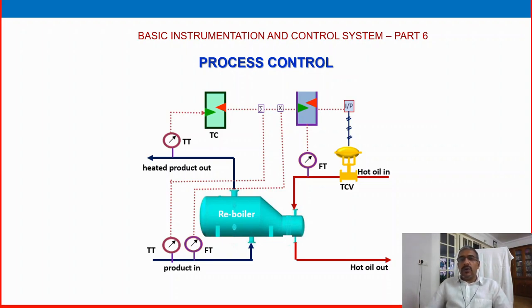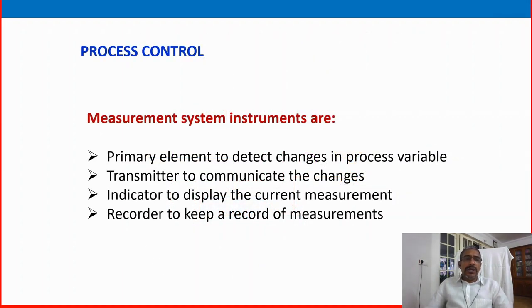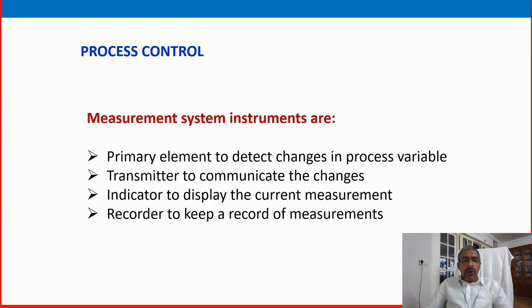Welcome to this video on process control. The process control measurement system instruments are: primary element — to detect changes in process variable; transmitter — to communicate the changes; indicator — to display the current measurement; recorder — to keep a record of the measurement. These are the main variables in process control, including the primary element that we discussed in our previous videos.